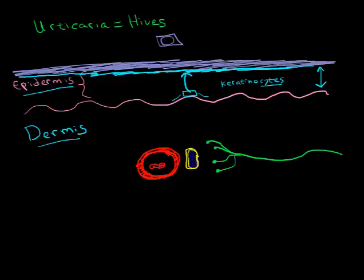This cell is called the mast cell, M-A-S-T, like the mast of a ship. That's what it looks like. But in fact, it was named after the German word mastzellen, which means stuffed full.